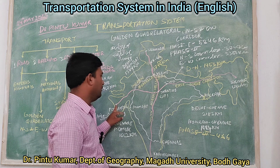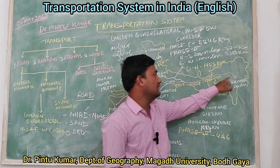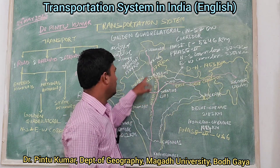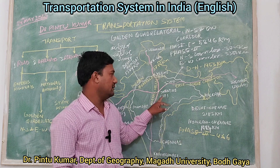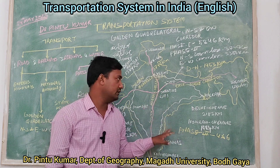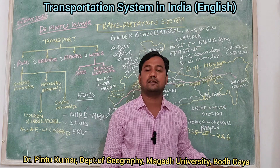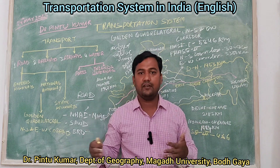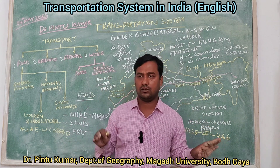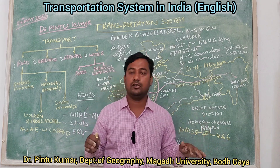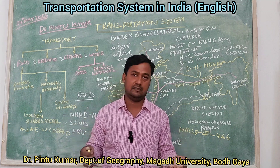The East-West Corridor is around 3,300 kilometers. This route starts from Porbandar in Gujarat to Silchar in Assam. The meeting point of the North-South Corridor and East-West Corridor is Jhansi in Uttar Pradesh. This corridor was especially designed to link the Northeast regions, which were always separated from a developmental perspective, to the main highway network.